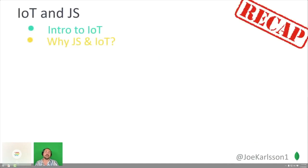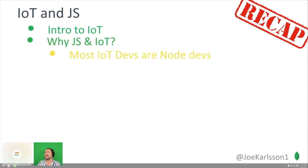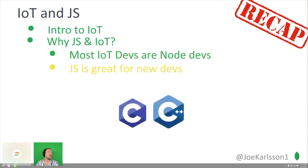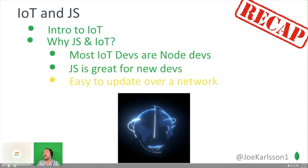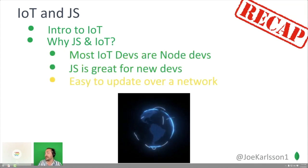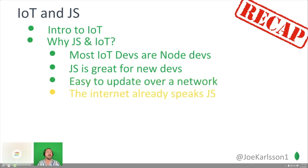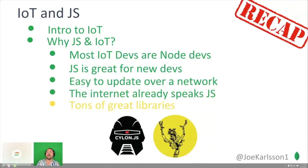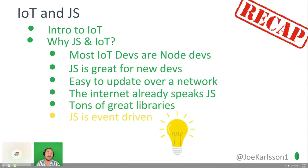Quick recap: why IoT and JS? Most devs are already using it — 58%. It's super easy to learn for new devs. It's easy to update with npm and git pull. The Internet already speaks JavaScript, so let's keep it going. There are tons of great libraries, and JavaScript's event-driven nature is how we architect IoT devices anyway.